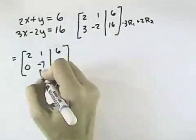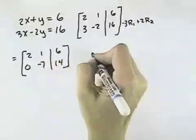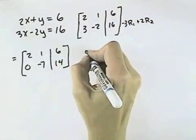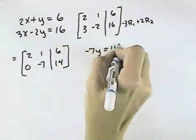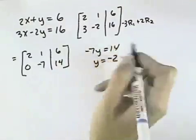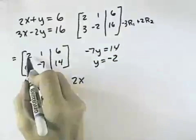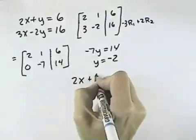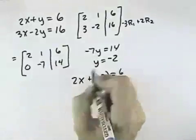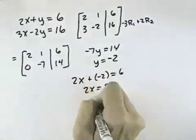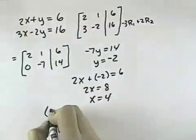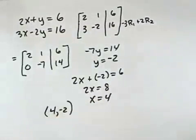From here now, we could actually solve the bottom equation for y if we wanted, because we have negative 7y equals 14, so y equals negative 2. Backing up, that means 2 times x from our first equation plus y, which is negative 2, will equal 6. So 2x equals 8 or x equals 4 for a solution ordered pair of 4, negative 2.